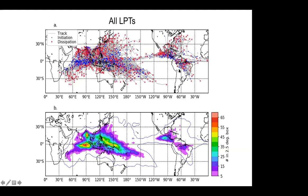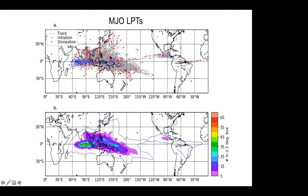These systems can be tracked all the way across the Pacific. If I add the constraint of 10 days or more propagating eastward, we're left with MJO-LPT — over 200 events. Now you can see the diversity of MJO. They tend to form in the equatorial region, but they propagate not only along the equator — they end up further north in summer and further south in winter, around January and February. So there's quite a bit of seasonality and individuality.